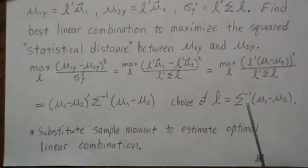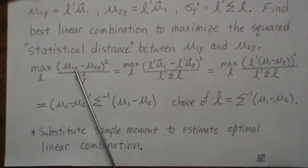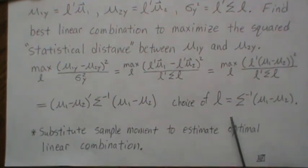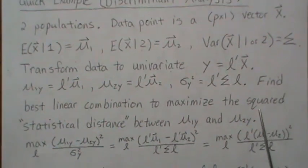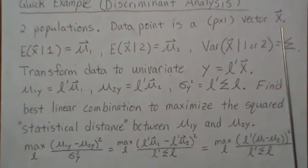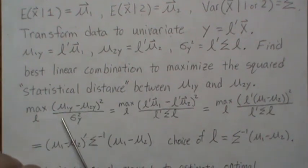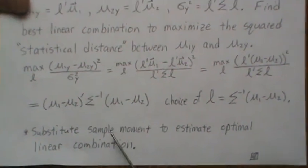And so what is commonly done is these two mean vectors, each is a number, and then there's a midpoint between them. And so the linear combination, using this linear combination of a new data point x, if it's above the midpoint, then it goes to one population. If it's below the midpoint, it goes to the other population.